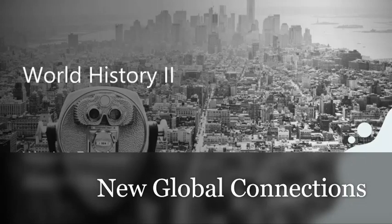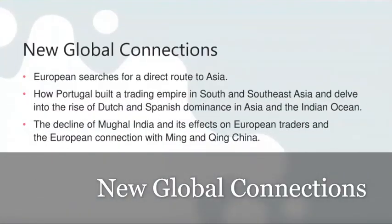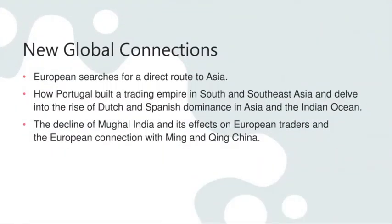We left off last time in week 1 with introducing new global connections, and in week 2 we will be continuing that subject. We will continue on with European searches for a direct route to Asia, which of course brings in the famous Christopher Columbus. We will discuss how Portugal built a trading empire in South and Southeast Asia and delve into the rise of Dutch and Spanish dominance in Asia and the Indian Ocean. Many rivalries and a lot of trade were taking place between different cultures, ethnicities and races — all of which led to what is known as the Age of Exploration.